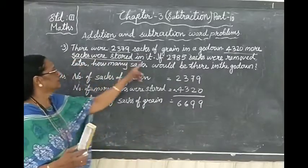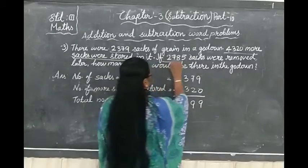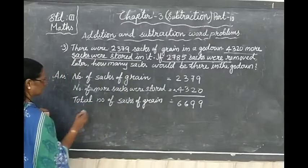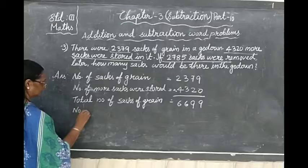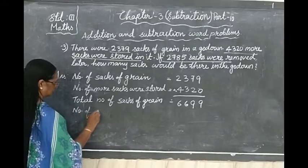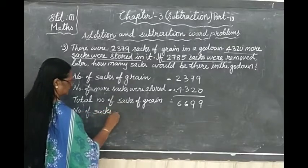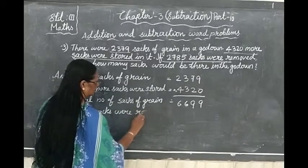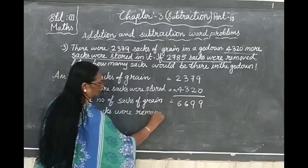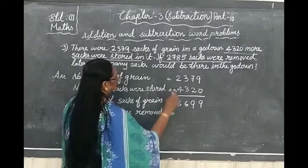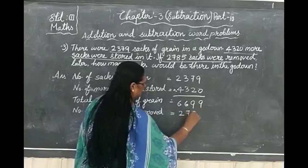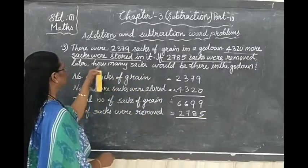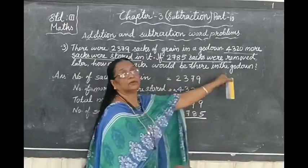Now, what happened? If 2,785 sacks were removed. So how to write, number of sacks removed is equal to 2,785. Now we should find out how many sacks would be there in the godown. So much is removed.